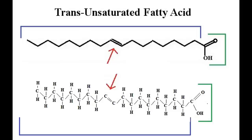Cis generally occurs in nature, and trans is generally considered more of a manufactured product. The significance of this double bond in the trans configuration is that it allows trans fats to stack very tightly, making it harder for your body to metabolize them. While trans fats are technically unsaturated, they are not the same as mono and polyunsaturated fat, and that has to do with the cis configuration of those fatty acids, which is explained in a different lecture.